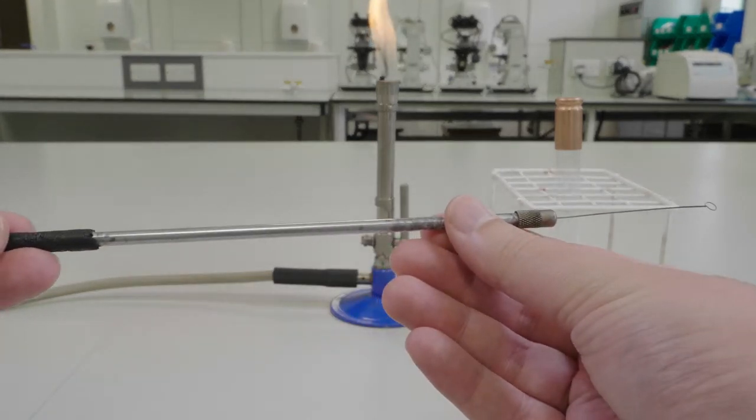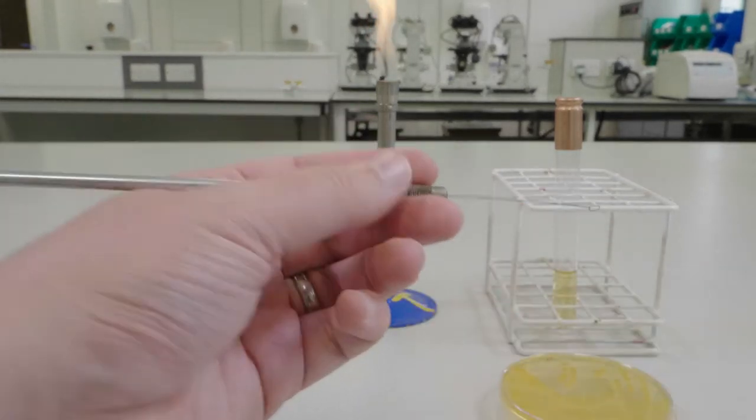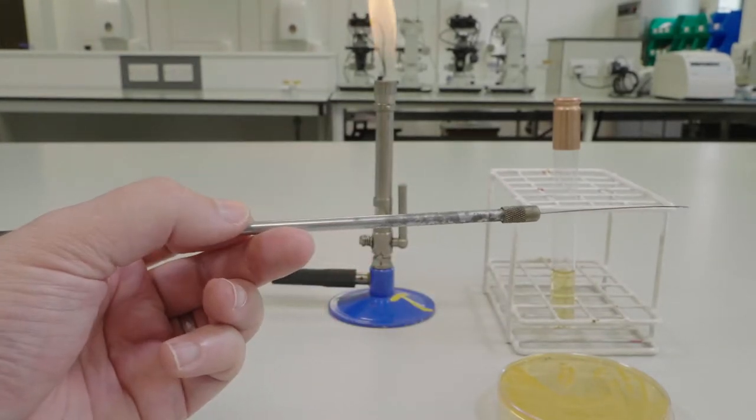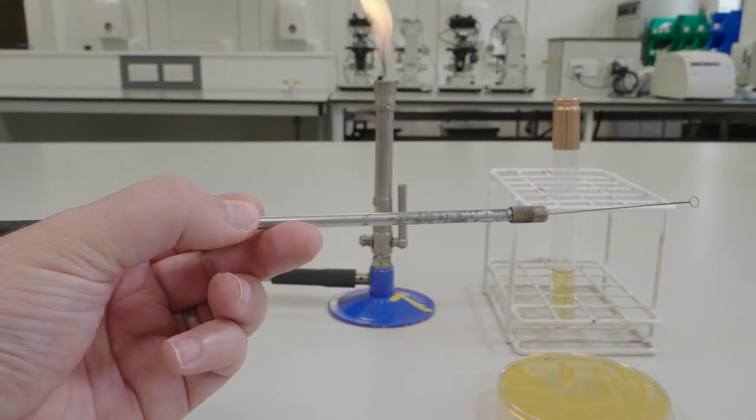There are two ways in which we hold the inoculating loop: like a pencil and like a paintbrush. I will show you which grip to use at each stage.